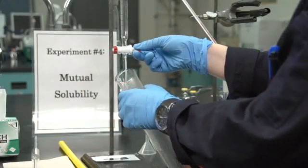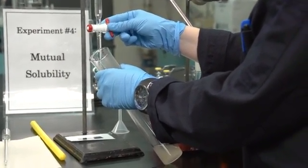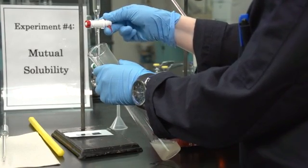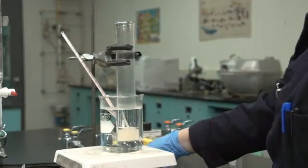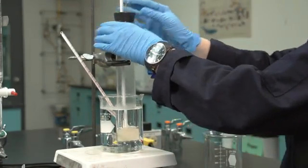From the burette, add 3 mils of distilled water to the freezing tube. Remember to record the volume of water added to two decimal places as read off the burette. Heat and cool the mixture again to determine the cloudy to clear and clear to cloudy temperatures.